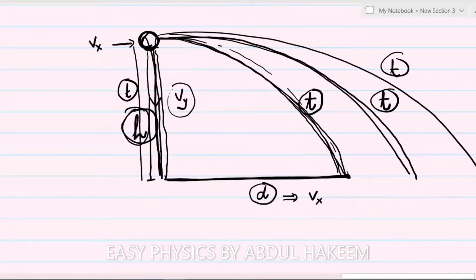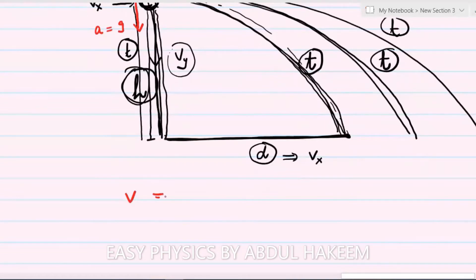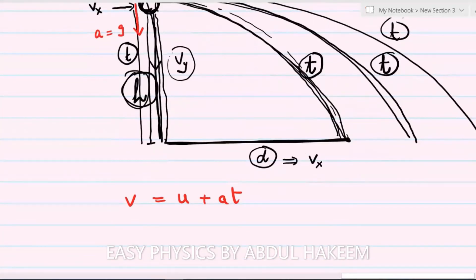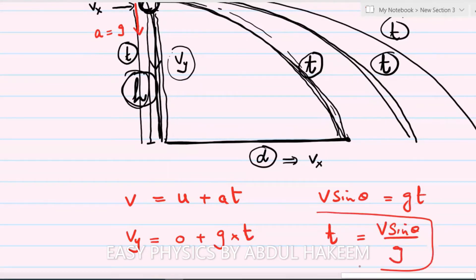Now suppose the object is dropped from height h. If it is released vertically downward, then the initial velocity is zero. In the absence of air, acceleration is constant. So we can write v = u + at. This is vertical motion, so we will use the vertical components of velocity. Vertical velocity vy, initial vertical velocity is zero, vertical acceleration is g, time taken is t. So vy, which is v sin theta, equals gt. Therefore, time t equals v sin theta over g. This is the equation for the time of free fall.